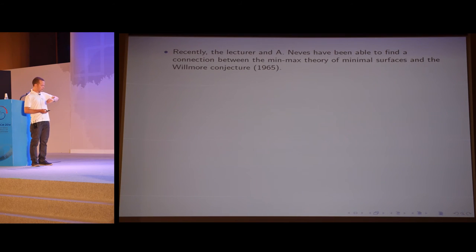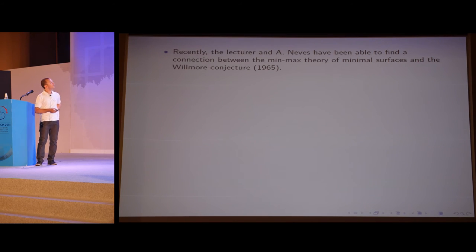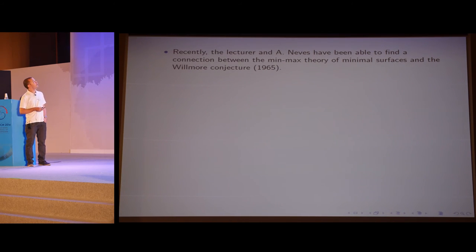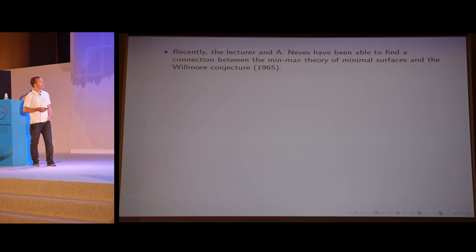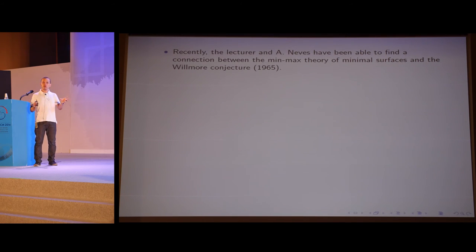In the remaining part of my talk, I would like to describe my joint work with Andre Neves, who is going to give a lecture tomorrow, on applications of the min-max theory. I will start by describing the Willmore conjecture proposed in 1965, which was about a quest to find the best torus of all.